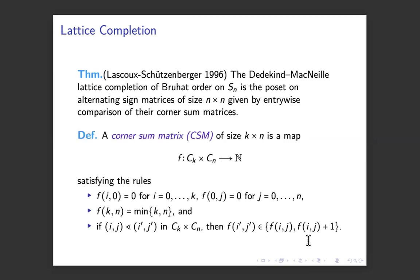So Matthias and I, bringing up the work with Matthias Konvalinka, we want to think of these corner sum matrices as really like functions on the chain of k plus 1 elements, 0 up to k plus 1, that's what ck is, cross with cn. And you make a function to the natural numbers, satisfying the rules that f of i comma 0 is always going to be 0.